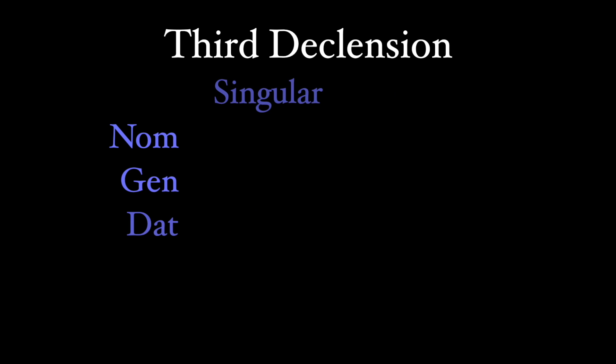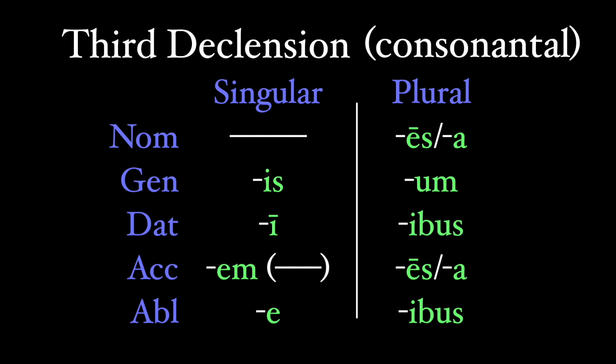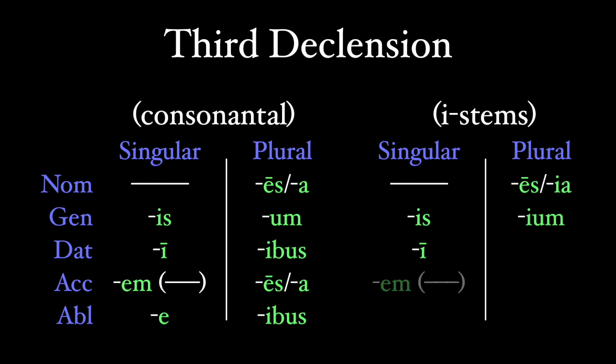What is traditionally taught as the regular third declension ending, the blank is-e-m-a, eis-um-ibos-eis-ibos? Well these are really the endings for the consonantal stems. The I-stems endings are slightly different. The good news, not too different.